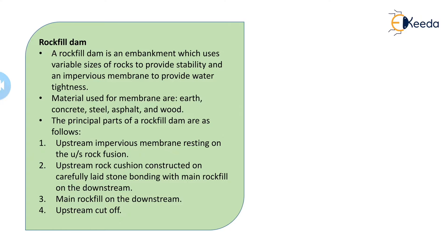The material used for the impervious membrane can be earthen, concrete, steel, asphalt, or wood. By using any one of these materials, we can construct the impervious membrane part, which is provided to keep the water tightness of the dam.